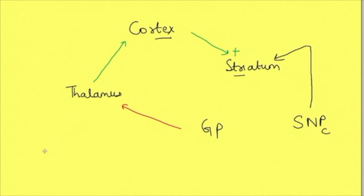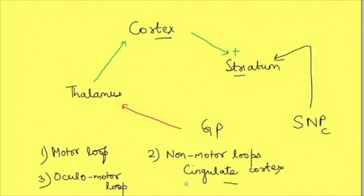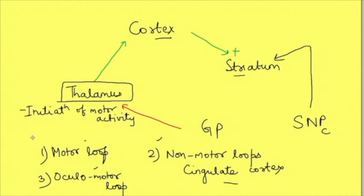One of these loops is the motor loop, where the motor cortex connects with the striatum, which connects with the globus pallidus, then thalamus, and back to the cortex. There are also non-motor loops — for instance, the basal ganglia has connections with the cingulate cortex, which are responsible for limbic and emotional functions such as facial expressions and expression of emotions. There is also an oculomotor loop for control of eye movement.